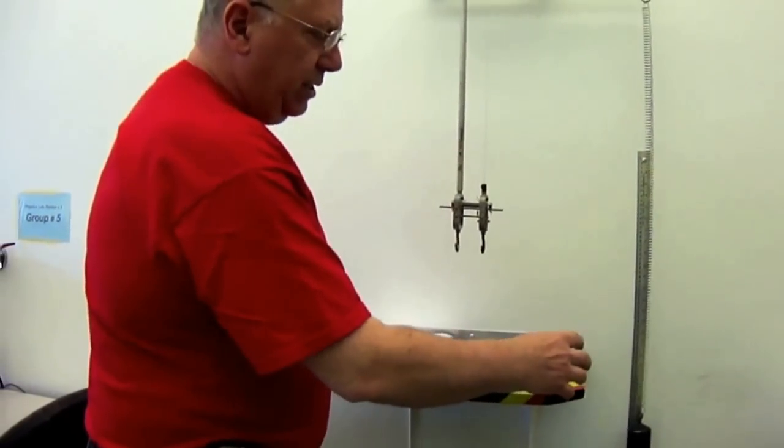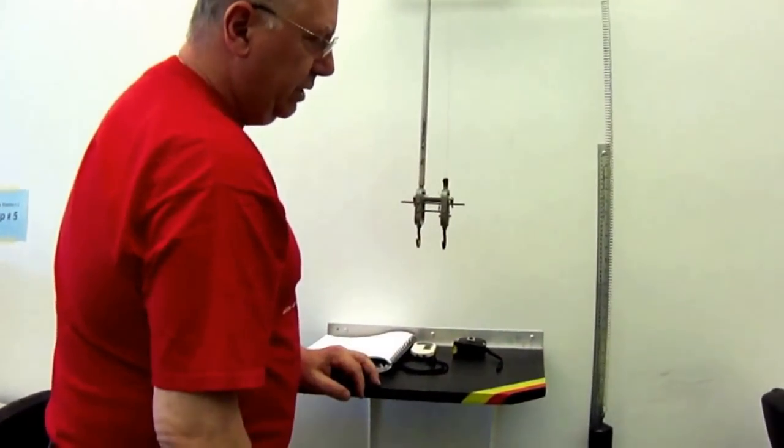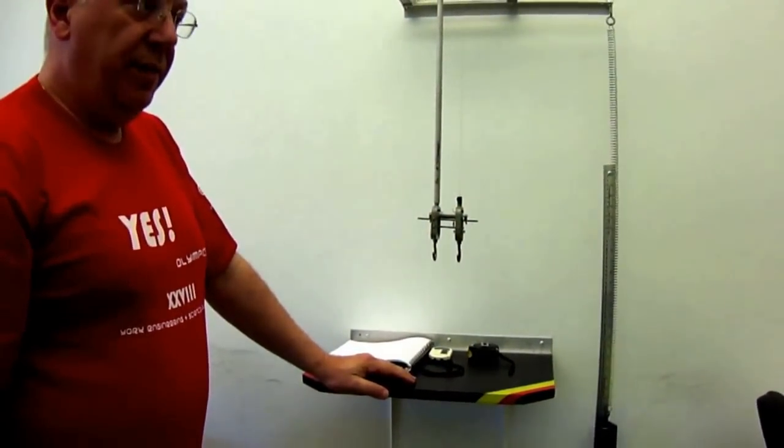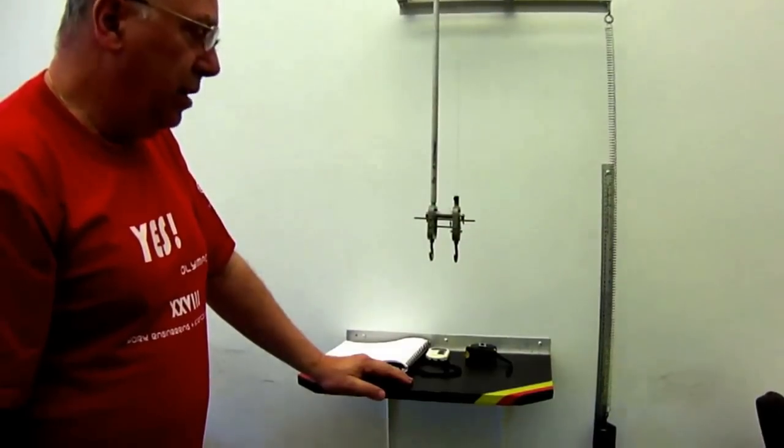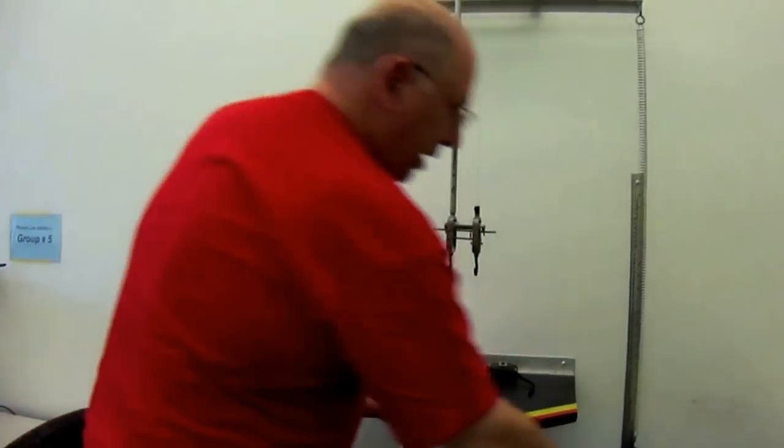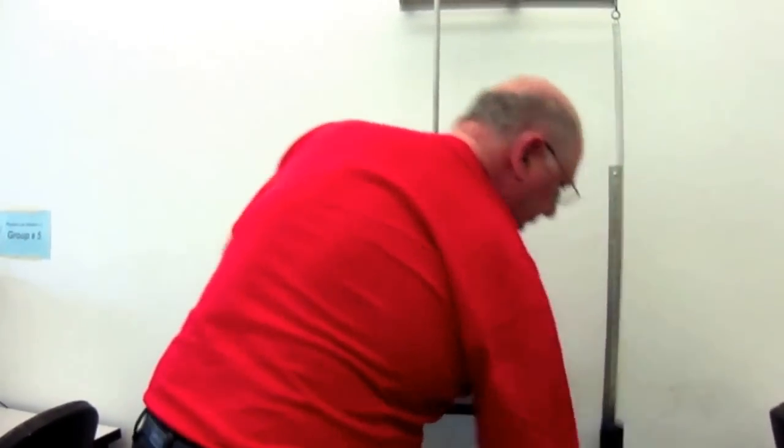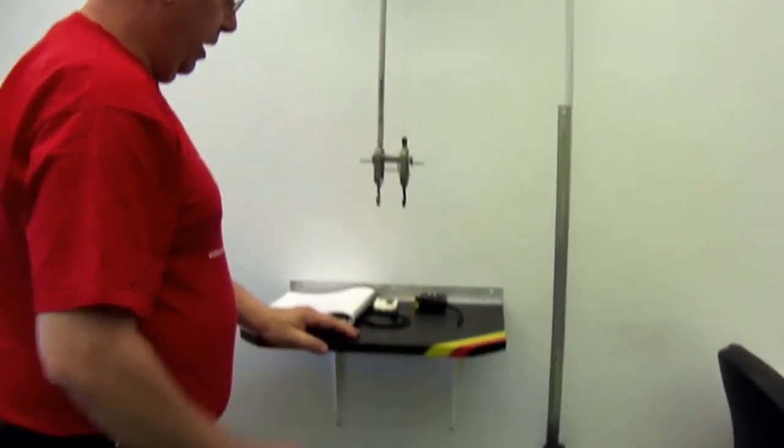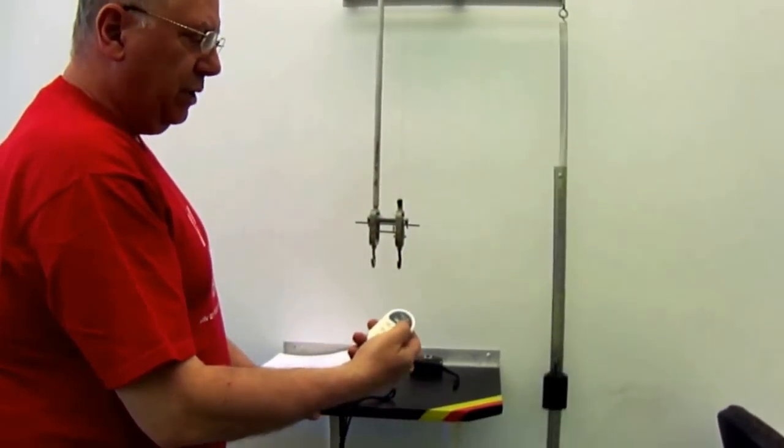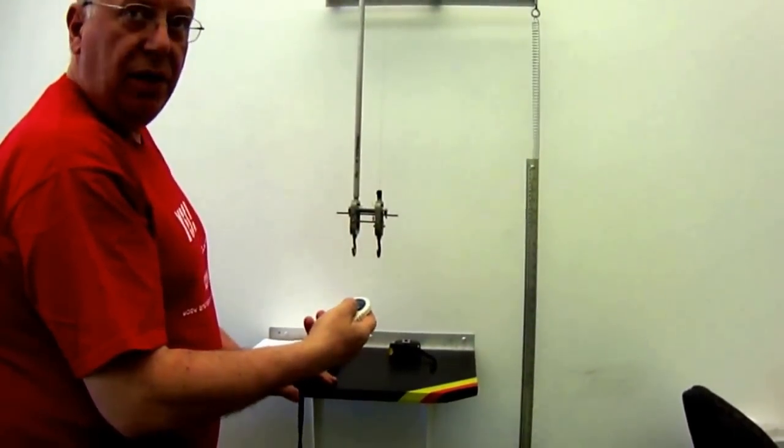A mass that is stationary at the end of the spring which it extends. Now we are going to determine the spring constant using a dynamic process. We're going to take the same mass, displace it, and then let it oscillate. What we're going to do, using the stopwatch that's provided, is measure the time for 10 oscillations.